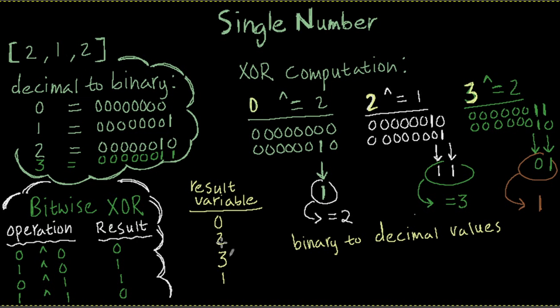So now result variable equals to 2. So we go to the next element, which is 1, and we compare that with our result. So 2 XOR 1. So now this is the binary representation for 2, and this is the representation for 1.